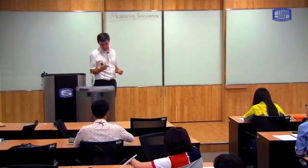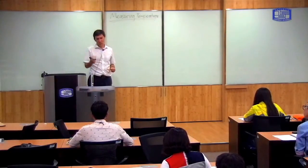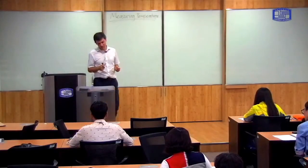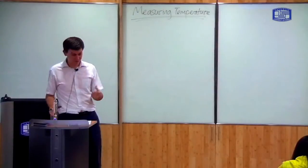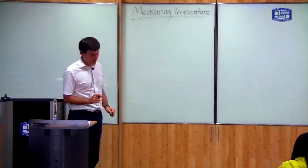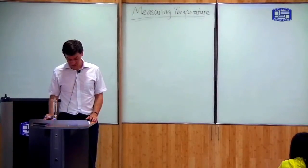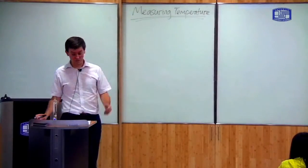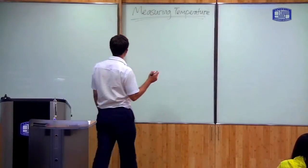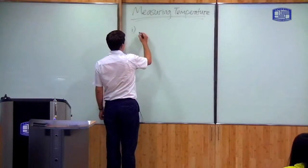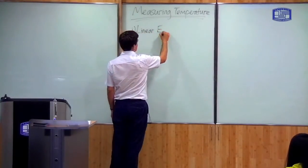So if you want to measure temperature, you need to find some way in which it affects a physical property of a system, and then by measuring the change in whatever property you can infer a change in temperature. I'm going to talk about three different kinds of properties, three different effects of temperature, and for each of those I'm going to describe a different way in which you can measure temperature.